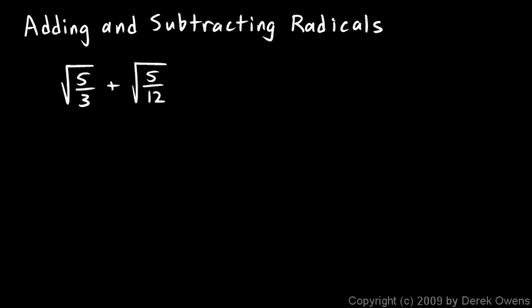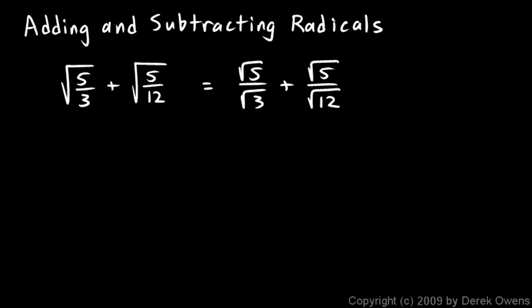This first one: we have the square root of 5 over 3 plus the square root of 5 over 12. We can simplify this if we break it apart into pieces and realize that 12 is going to have a perfect square factor. So I'm going to rewrite the problem as square root of 5 over square root of 3, plus square root of 5 over square root of 12. Any fraction under a radical can be broken up into a fraction involving two radicals, so that's what I've done.